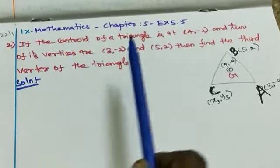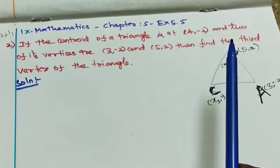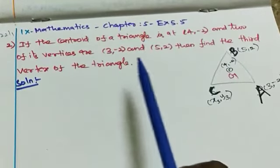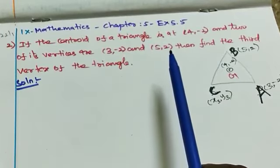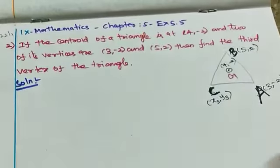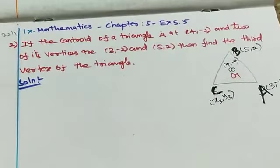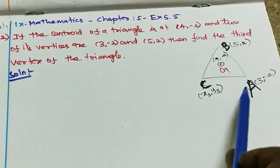If the centroid of a triangle is (4, -2) and two of its vertices are (3, -2) and (5, 2), find the third vertex of the triangle. So we have a triangle with two points given.